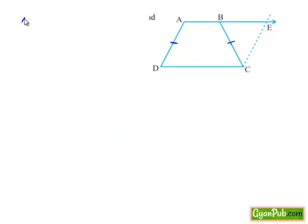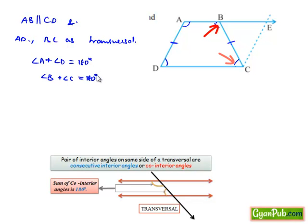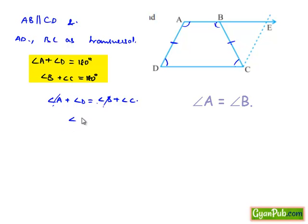Now if we consider AB parallel to CD with AD and BC as transversals, then angle A and angle D lie on the same side of the transversal. So angle A plus angle D equals 180 degrees, and angle B plus angle C equals 180 degrees. Equating both: angle A plus angle D equals angle B plus angle C. Since we proved angle A equals angle B, cancelling them from both sides gives angle C is equal to angle D. This is the second proof.